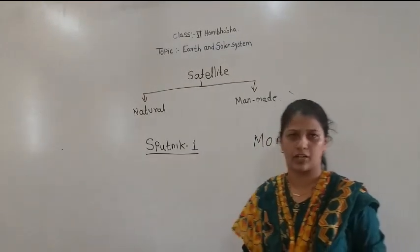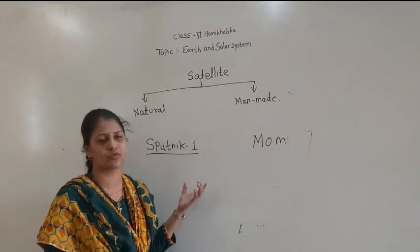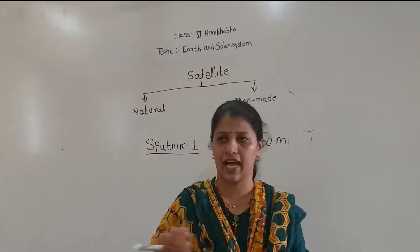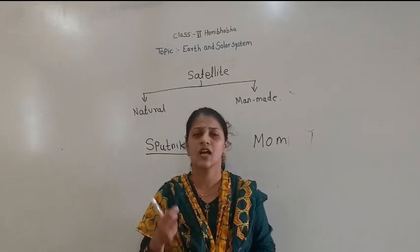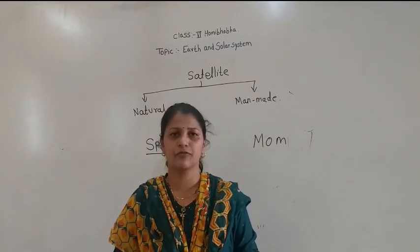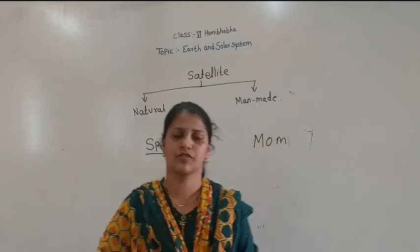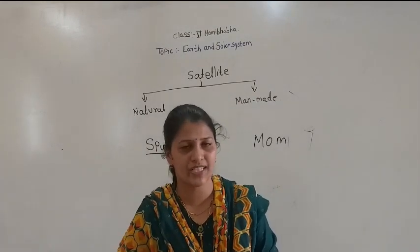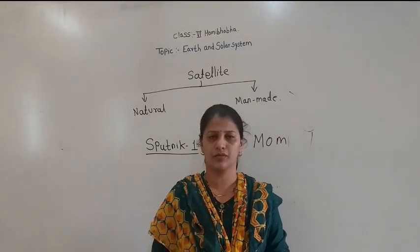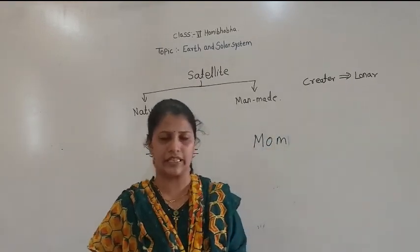Asteroids are rocky or heavenly bodies found between Mars and Jupiter. Meteoroids are small heavenly bodies which have fallen on the Earth because of Earth's gravitational force. In Maharashtra, the Lonar Lake was formed due to a meteoroid impact.